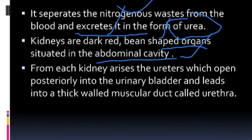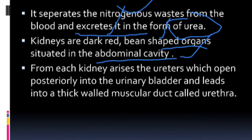From each kidney arises the ureter. There are a pair of ureters. From each kidney arises a ureter which opens posteriorly into the urinary bladder — a sac-like structure. This is the urinary bladder where urine is stored.